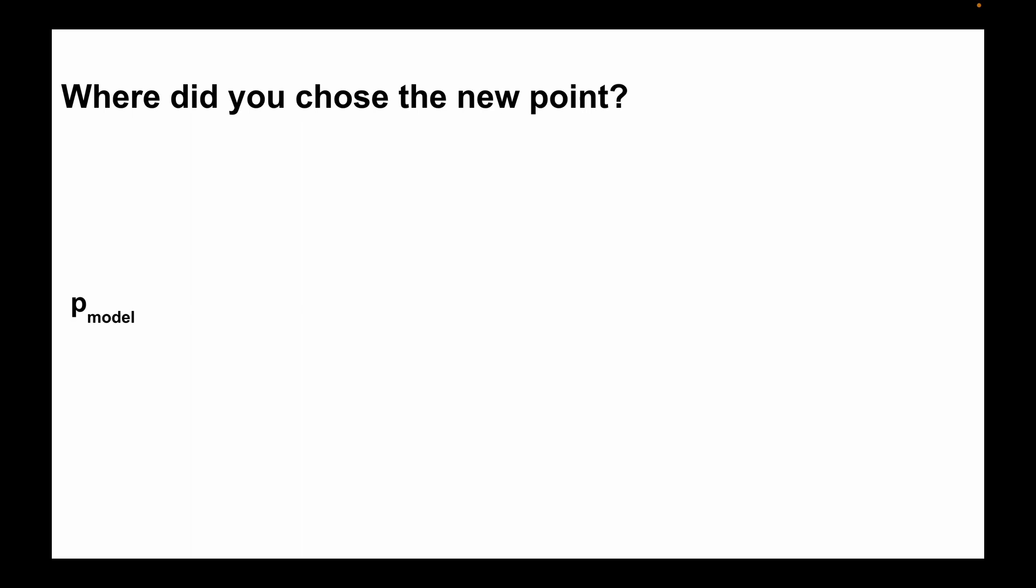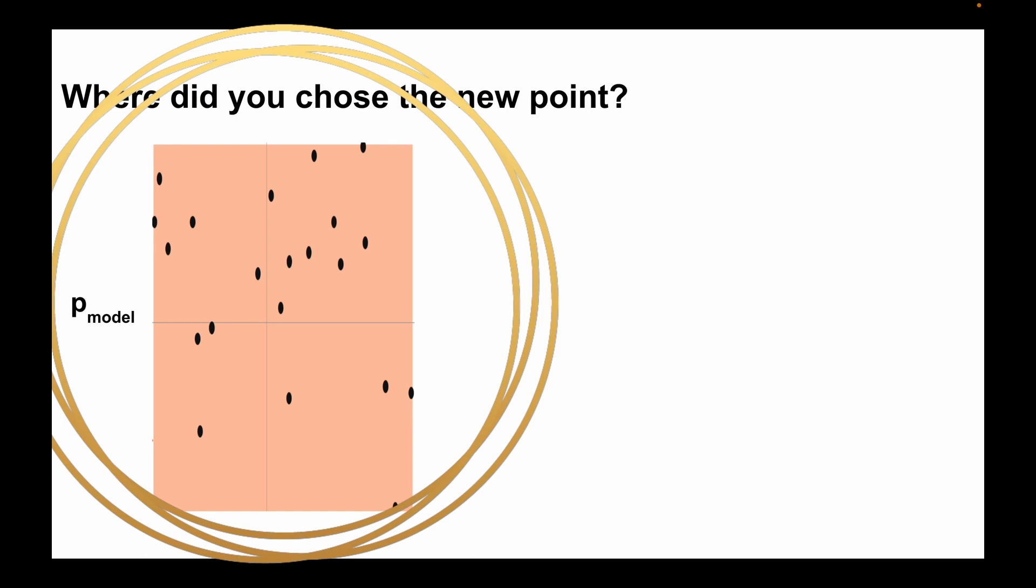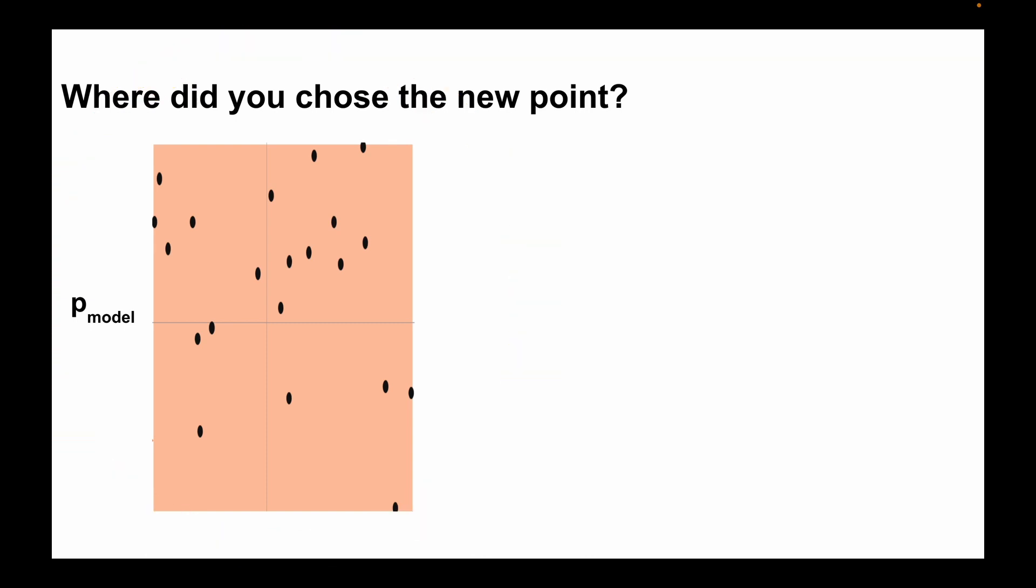Now did you imagine your pmodel as this figure? This pmodel might be a simple rectangular box which I colored in this orange color where points may be found. To generate new data, simply choose any random point inside this colored rectangular box. In formal terms, it is called sampling from the distribution model or pmodel.